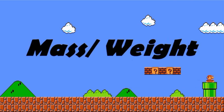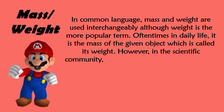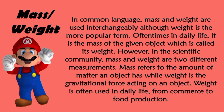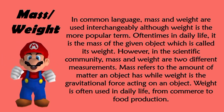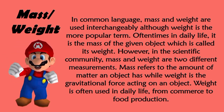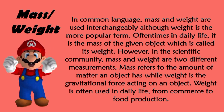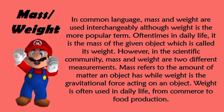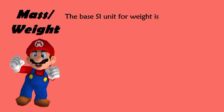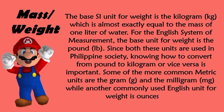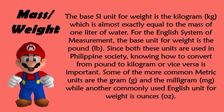Mass and Weight. In common language, mass and weight are used interchangeably, although weight is the more popular term. However, in the scientific community, mass and weight are two different measurements — mass refers to the amount of matter an object has, while weight is the gravitational force acting on an object. Weight is often used in daily life, from commerce to food production. The base SI unit for weight is the kilogram, which is almost exactly equal to the mass of one liter of water. For the English system, the base unit for weight is the pound.